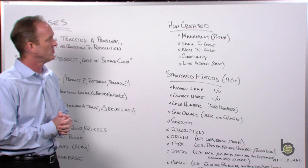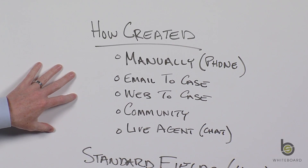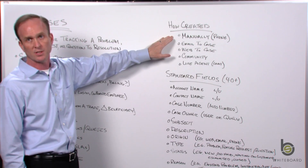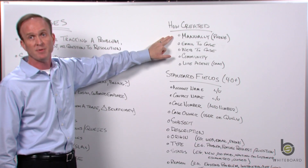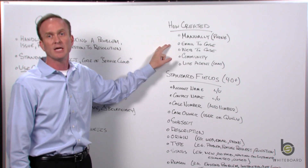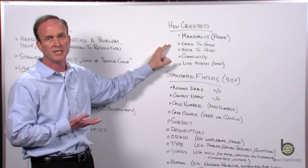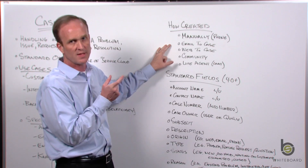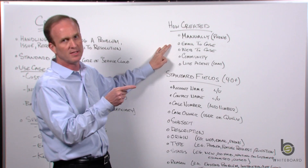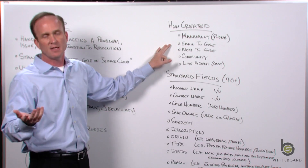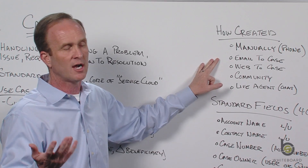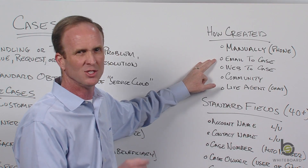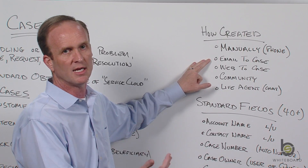Let's talk about the channels through which cases come in and are created. Very commonly they're created manually — for example, in a call center you're taking a request from a customer and manually typing in and opening that case. There are also automated methods. You can have an email address like support@yourcompany.com, and Salesforce can automatically create a case from an incoming email, matching the sender against a contact in the database. Attachments sent via email will also come in and get associated to that case automatically.